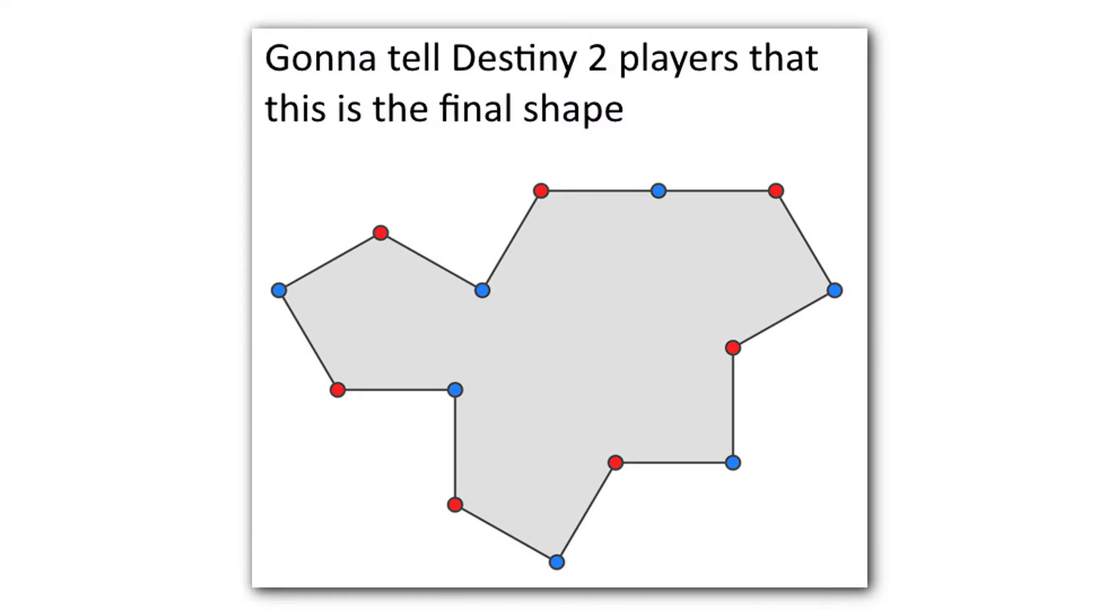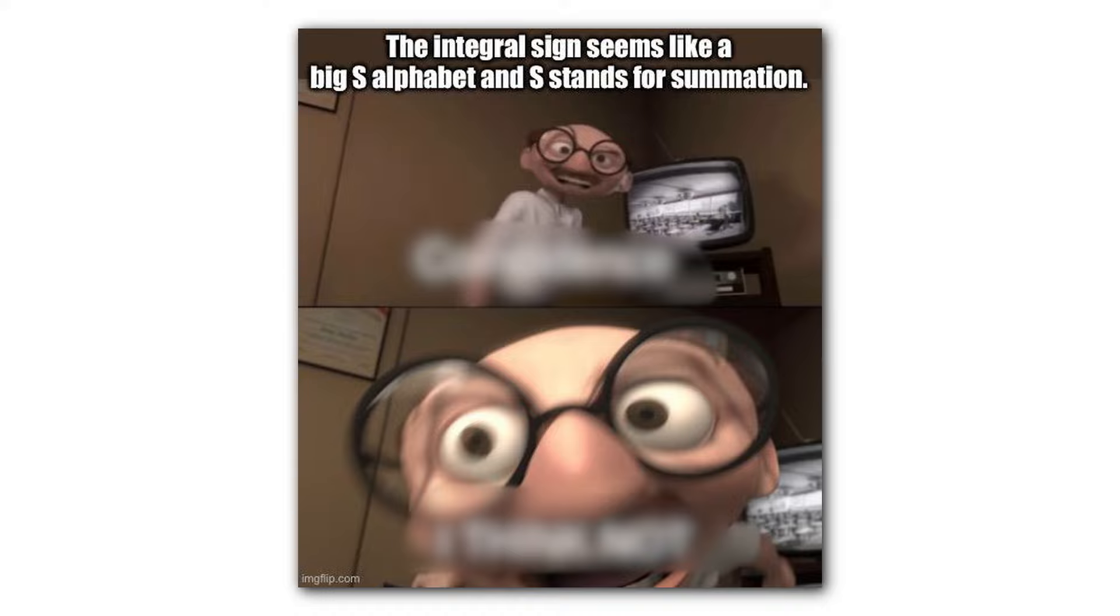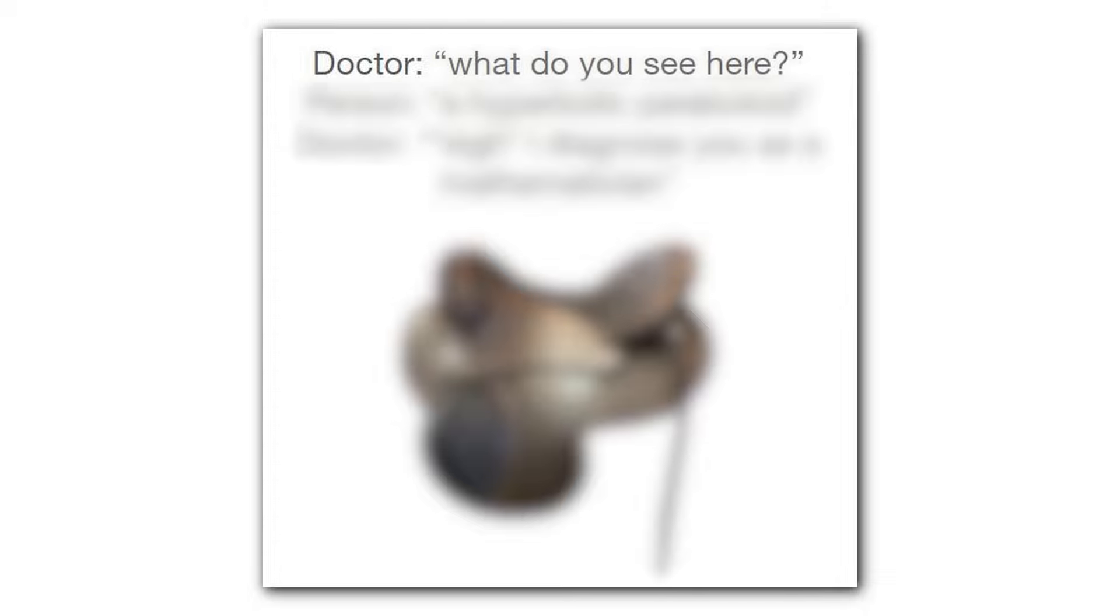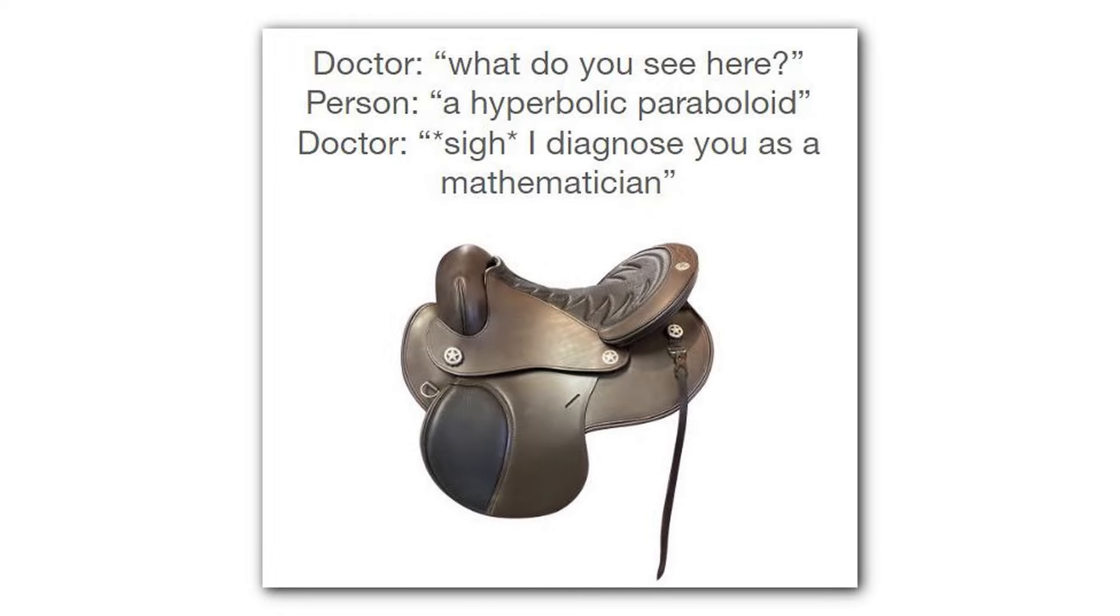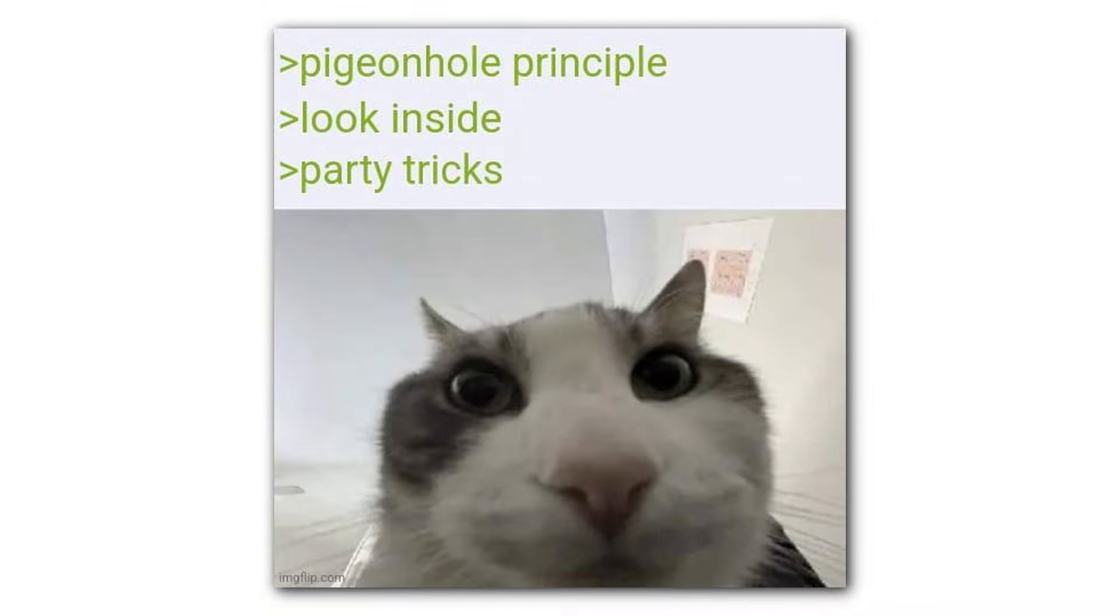Gonna tell Destiny 2 players that this is the final shape. Domain. Function. Range. The integral sign seems like a big S alphabet. And S stands for summation. Coincidence. I think not. Doctor. What do you see here? Person. A hyperbolic paraboloid. Doctor. Psy, I diagnose you as a mathematician. Pigeonhole principle. Look inside. Party tricks.